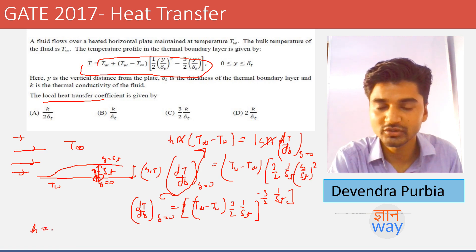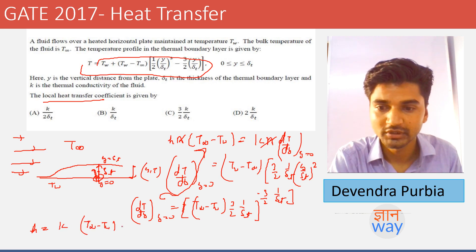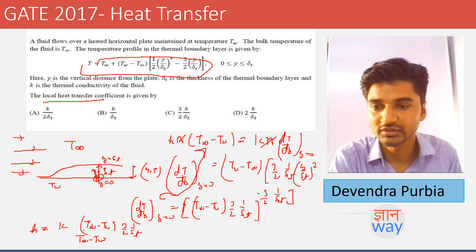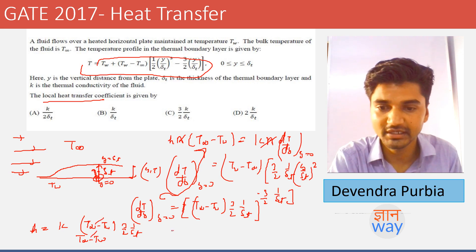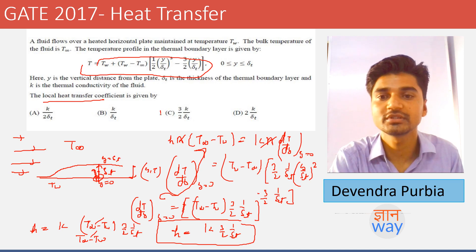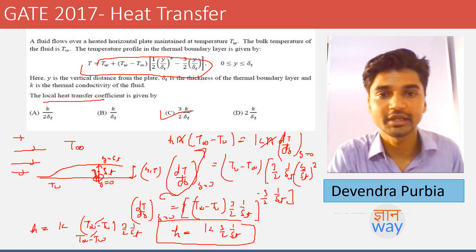Substituting into the heat transfer equation, h equals k·(T_infinity − T_w)·(3/2)·(1/delta_t) divided by (T_infinity − T_w). The (T_infinity − T_w) terms cancel, giving the local heat transfer coefficient h equals (3k)/(2·delta_t). Therefore option C is correct.